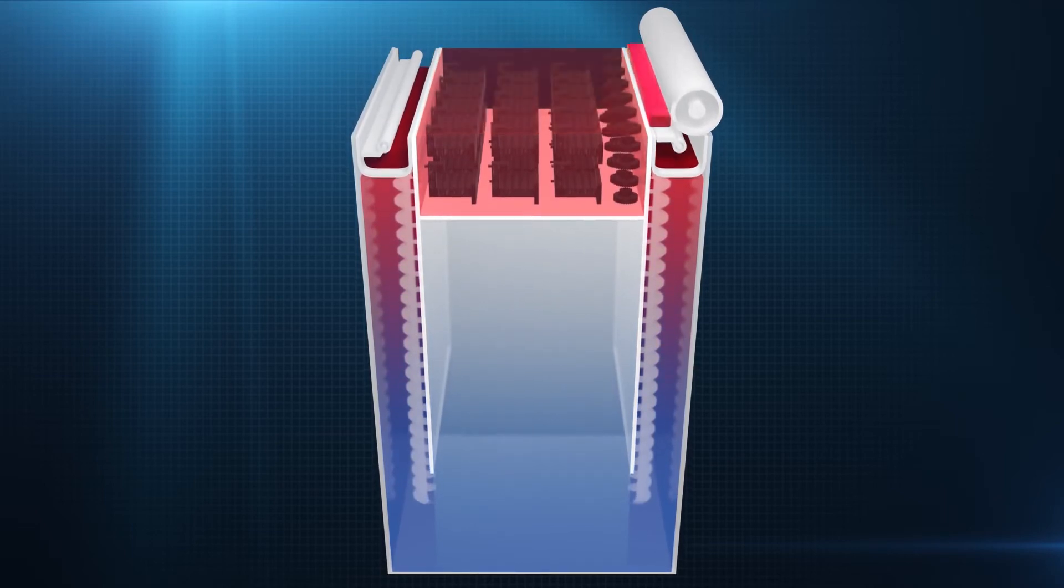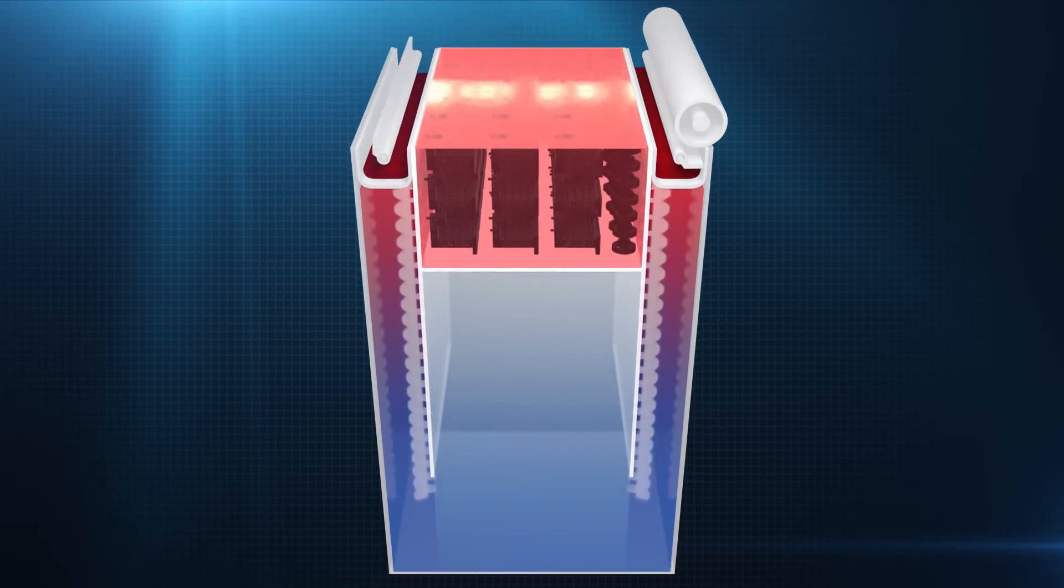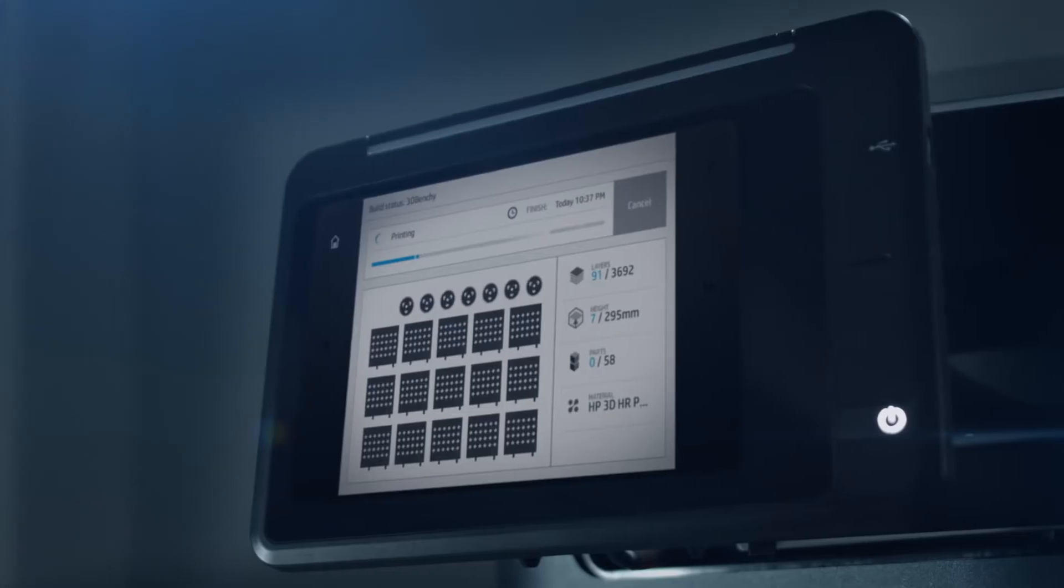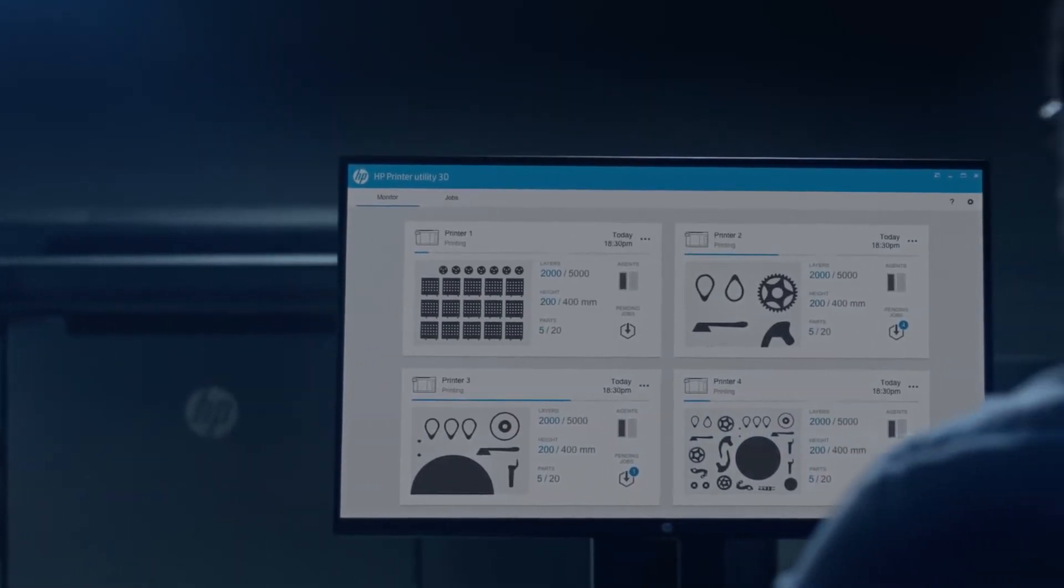The build platform is then lowered layer by layer by precise mechanisms, which help ensure a high degree of dimensional accuracy. At any point during the printing process, you can monitor job status in the command center.